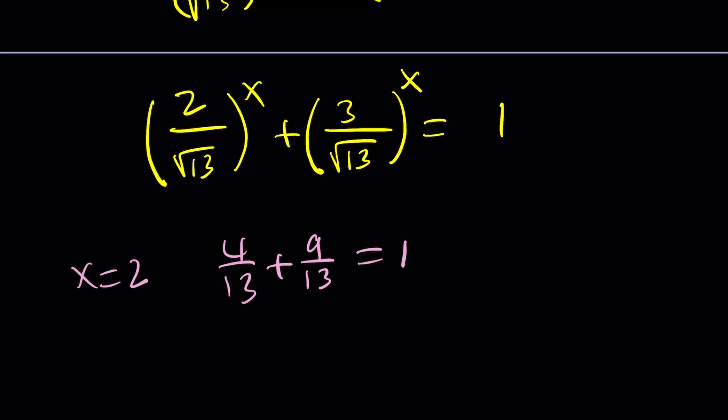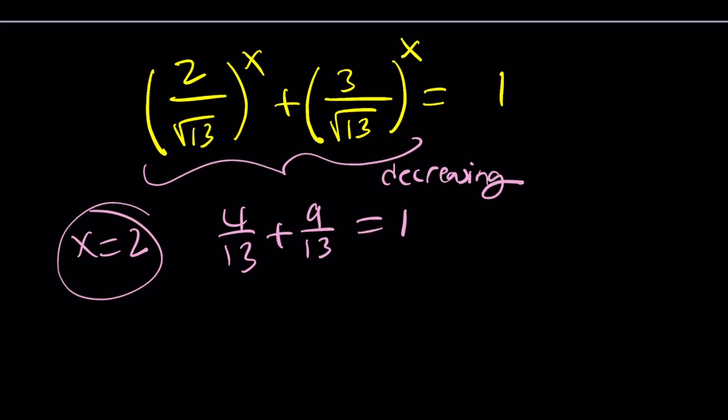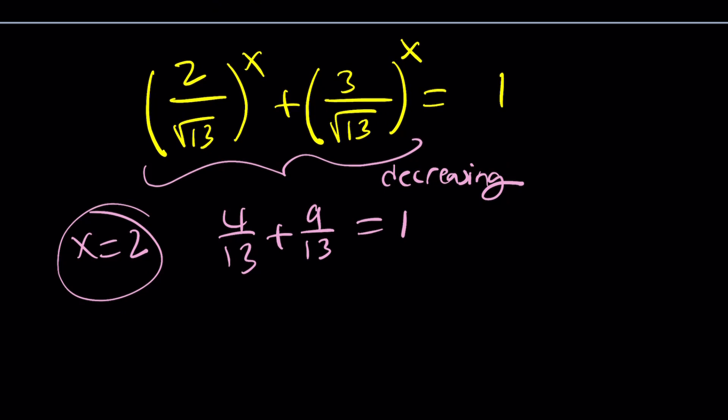For a very good reason, this is a decreasing function, because the bases are less than 1, since square root of 13 is greater than 2 and 3. We have a decreasing function equal to a constant, which is a horizontal line graphically. So there should be a single solution. Yes, we already know x equals 2 is a solution.